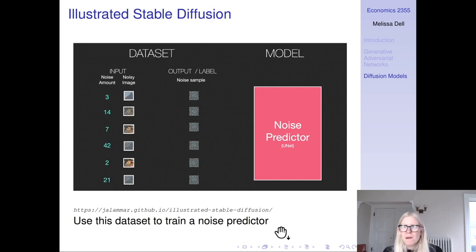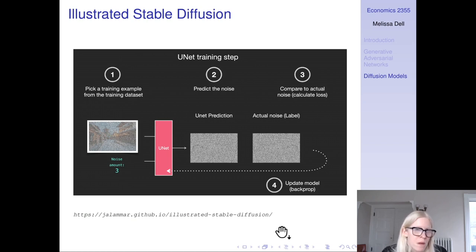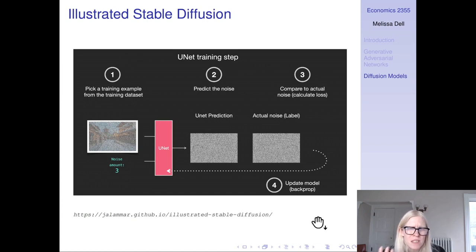You then use this dataset to train a noise predictor. Remember from the DDPM paper, the goal is to predict the noise rather than to predict the image or the latent itself. You pick a training example — an image that has had a certain amount of noise added — and that goes into the U-Net model. The U-Net gives a prediction for the noise, and we have our actual noise since we're the ones that created it. We use that to compute our loss and update the model parameters through backpropagation. Compared to GANs, which seem quite convoluted, this is very easy to understand.